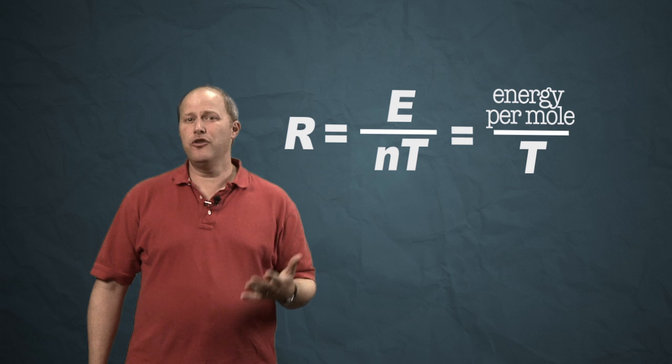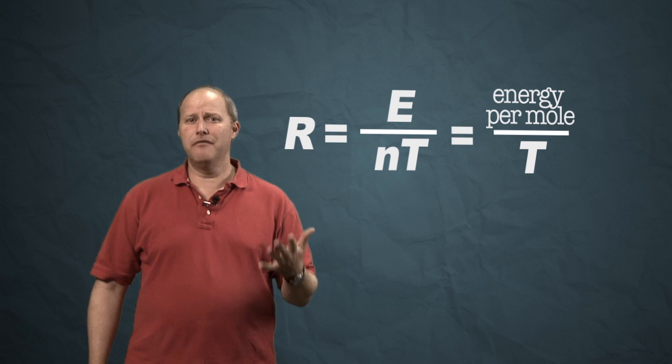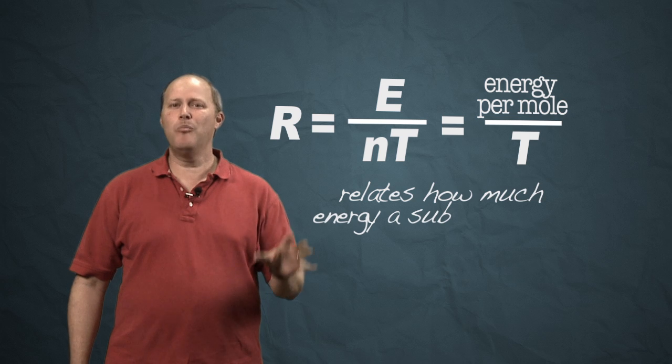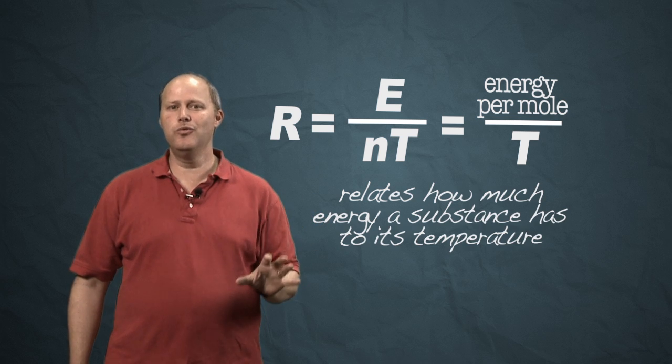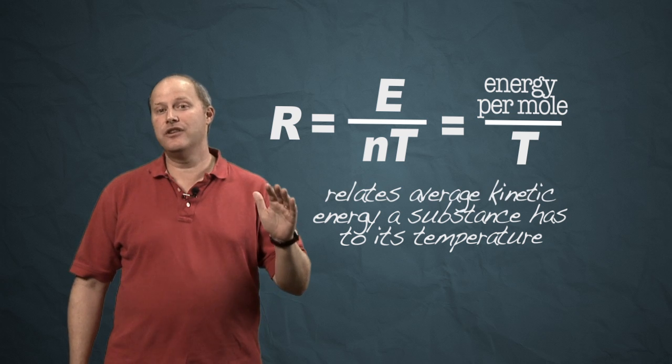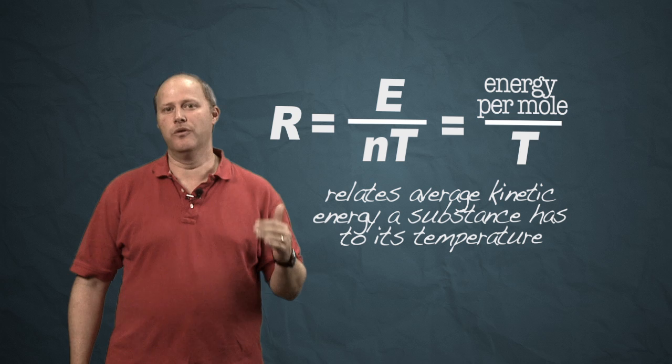And so what we discover is that the value for R is actually a very important universal constant that relates how much energy a substance has to the temperature. And in particular, it relates its average kinetic energy to the temperature.